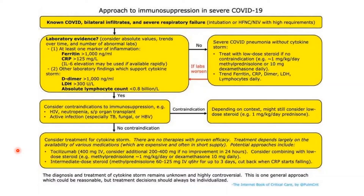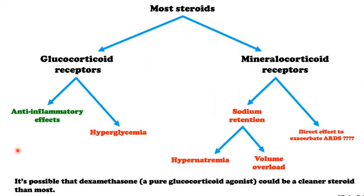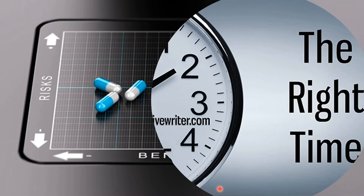Which steroid is better? The glucocorticoid receptor has the anti-inflammatory effect, while the mineralocorticoid effect might have some detrimental effect. So it is possible that dexamethasone, a pure glucocorticoid agonist, could be a cleaner steroid than most. It is basically about the right drug at the right dose when it is needed.